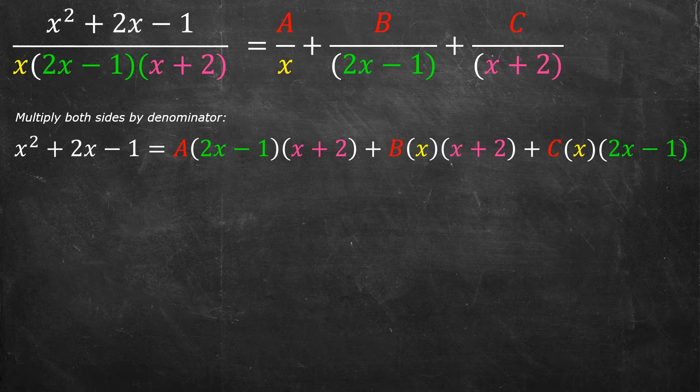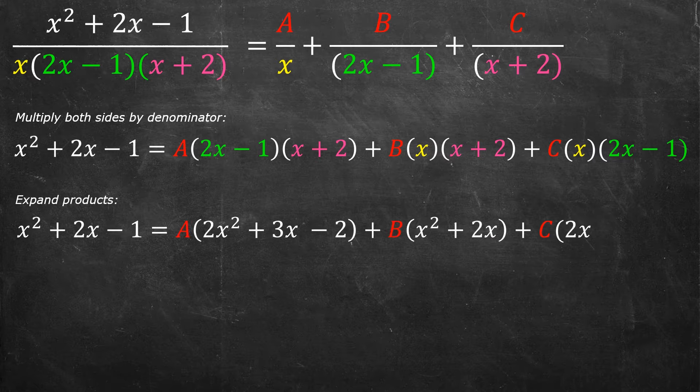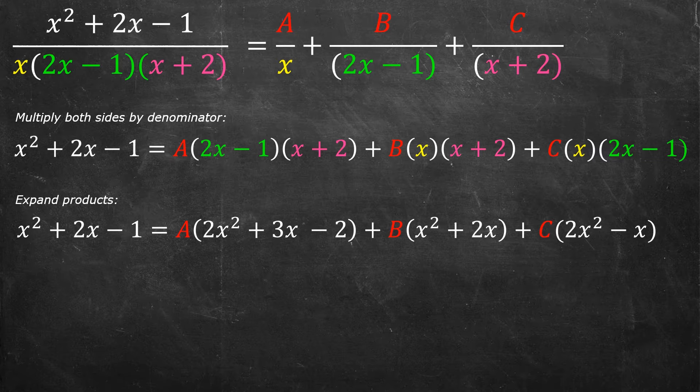Now I'm going to clean it up a little bit. I've got an a times something, a b times something, and a c times something. I'm going to expand all three of those. So the left-hand side remains the same, becomes a times a quadratic, b times a quadratic, and c times a quadratic.